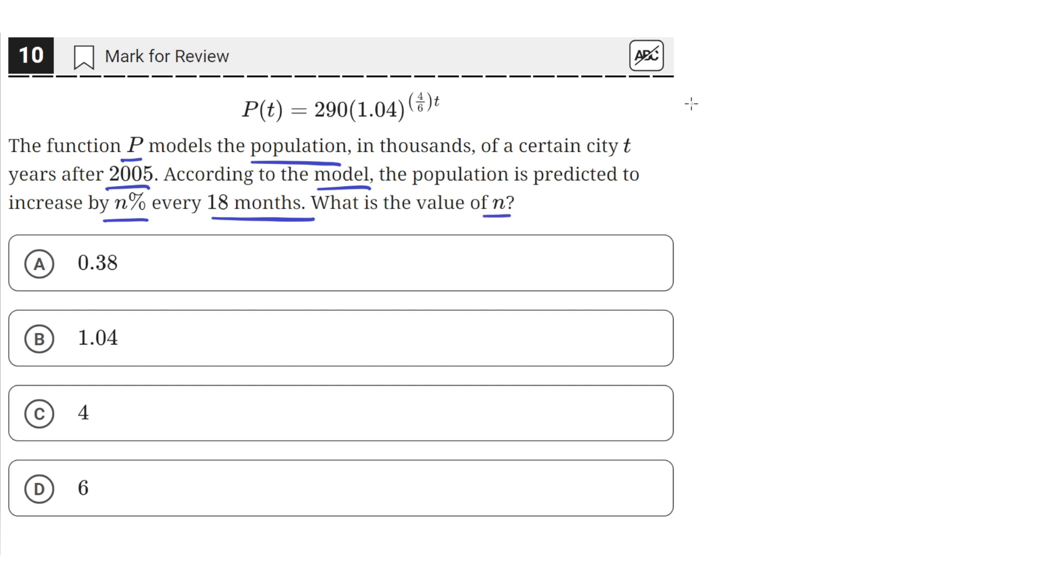So we have this equation that gives us the population of a city in thousands as a function of t, the time in years. And we want to see how much the population changes every 18 months.